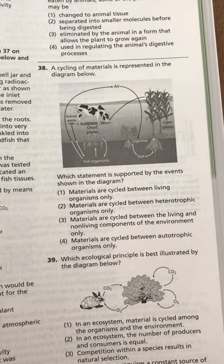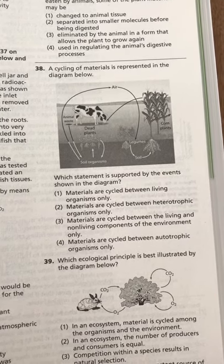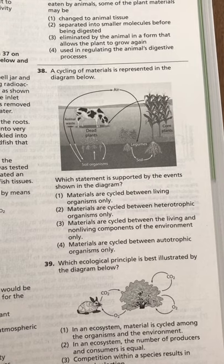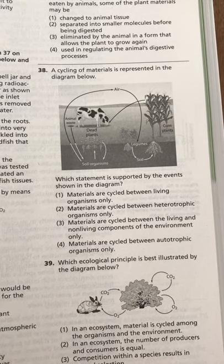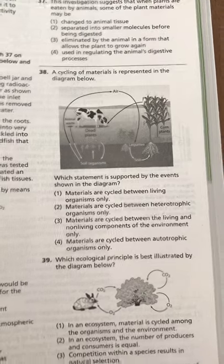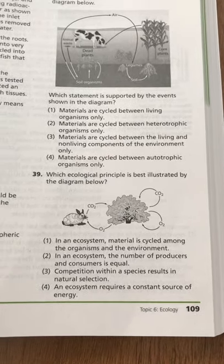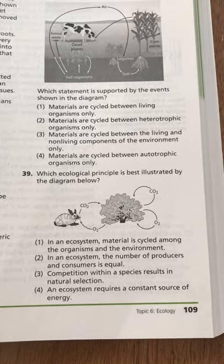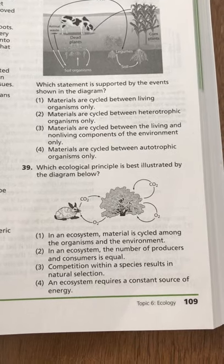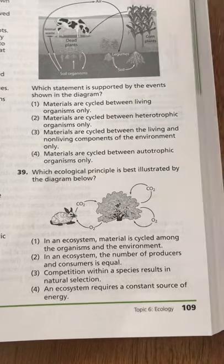Number 38: A cycling of materials is represented in the diagram below. Which statement is supported by the events shown — materials are cycled between living organisms only; materials are cycled between heterotrophic organisms only; materials are cycled between the living and non-living components of the environment; or materials are cycled between autotrophic organisms only? Number 39: Which ecological principle is best illustrated by the diagram — an ecosystem's material is cycled among the organisms and the environment; in an ecosystem the number of producers and consumers is equal; competition within a species results in natural selection; or an ecosystem requires a constant source of energy.